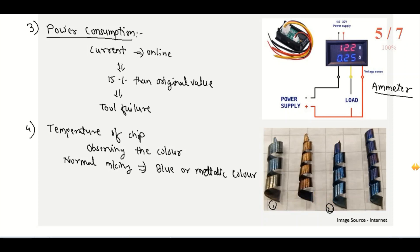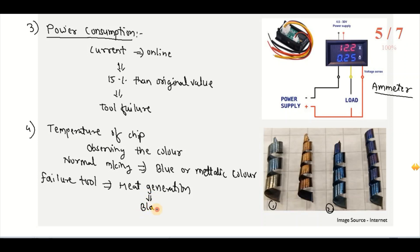When machining is done with a failed tool, because of higher heat generation, the color of the chip turns to black or burnt color. In normal machining we get blue or metallic color, but when we are using a failed tool the heat generation increases significantly and we get the chip color as black or burnt. At that point we can say that tool failure has occurred.